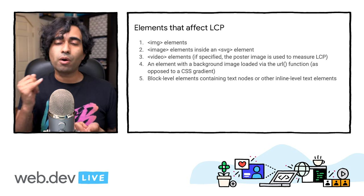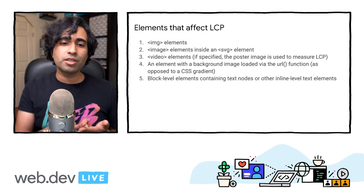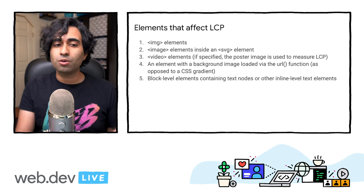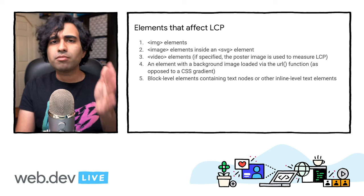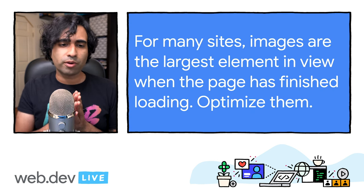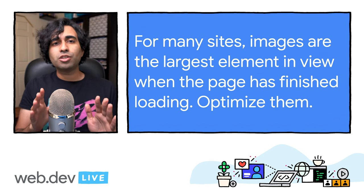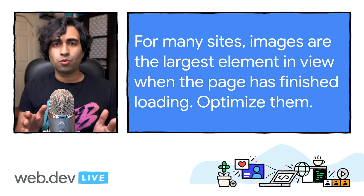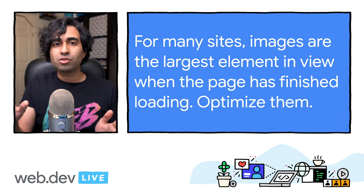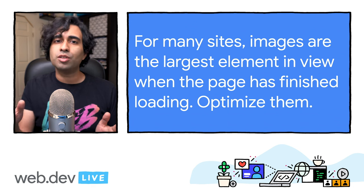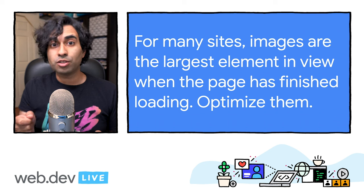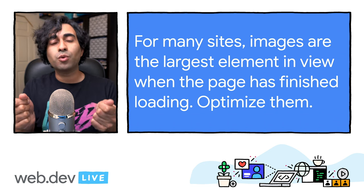Things that impact LCP include image elements, image elements inside SVG elements, video elements, and block-level elements containing text nodes. For many sites, images are the largest element in view when the page finishes loading — especially as UX patterns have shifted toward using more hero images. It's very important to optimize images, especially anything visible within the initial viewport.